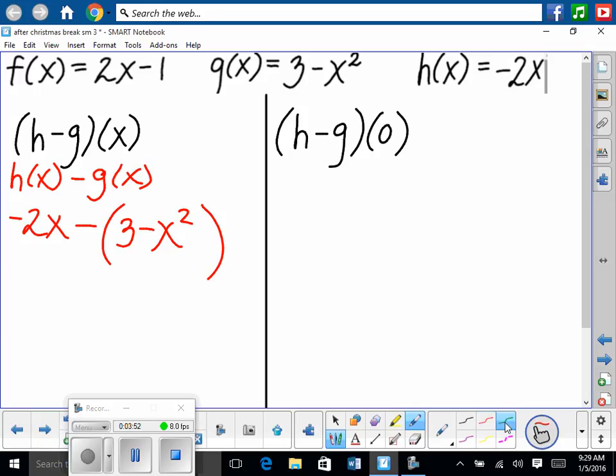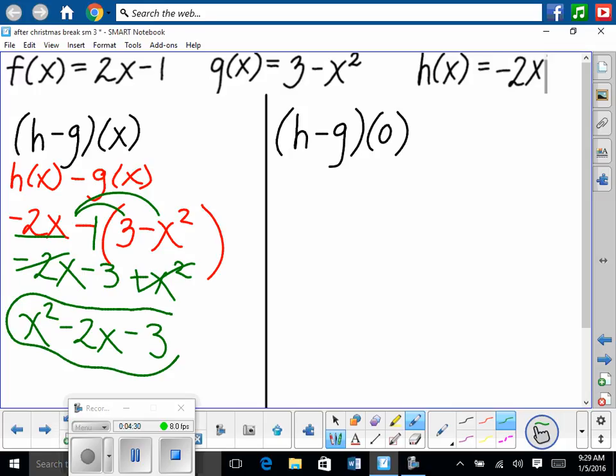Okay. So now from here, there's a couple different ways we can look at this. I think most of you like to look at this as technically we have a -1 being multiplied in front here, right? So let's distribute -1 through. -1 times 3 is -3. -1 times -x² is positive x². Does everybody see how I took care of the -1? Any questions? And then in front we still have our -2x. So then from there, we'll combine my terms, put it in standard form. x², no other x² terms. And then -2x. And then -3. This is (h-g)(x).